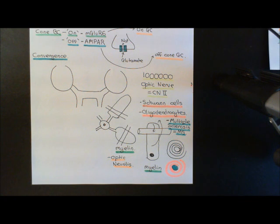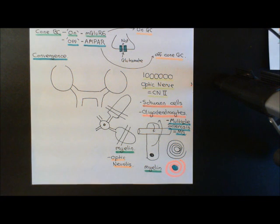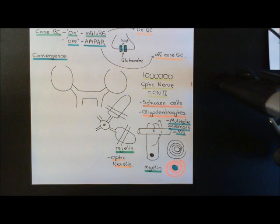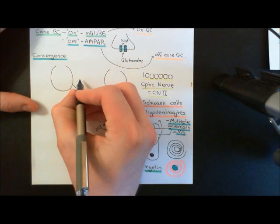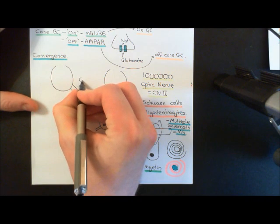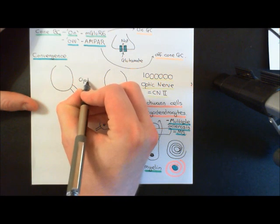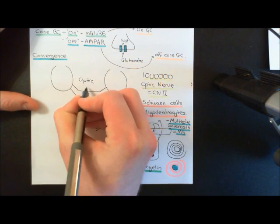Multiple sclerosis usually does begin as a relapsing, remitting disease, so you do get remission for a while. Continuing on, the next bit we need to discuss is the optic chiasm — the crossing over of the fibres from the nasal hemiretina in the optic chiasm.